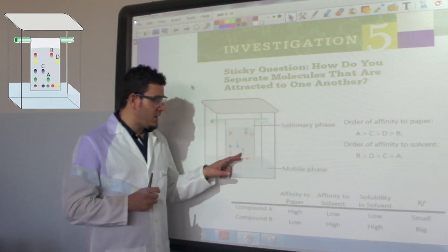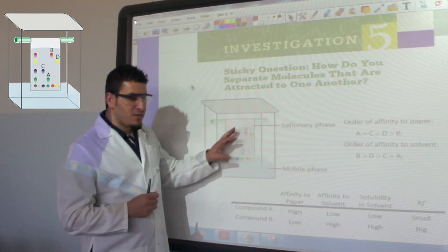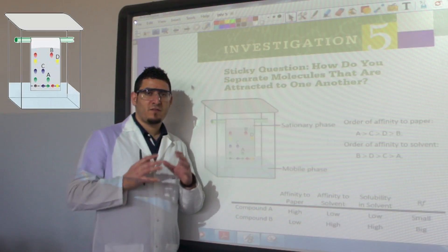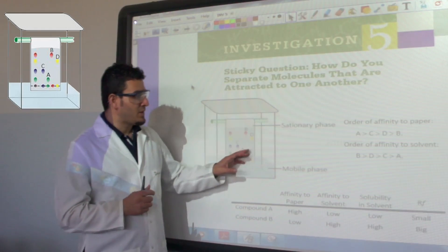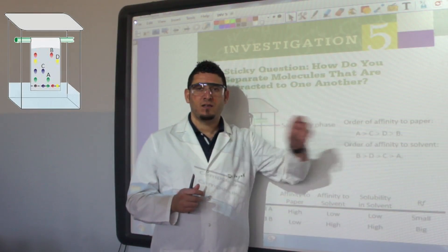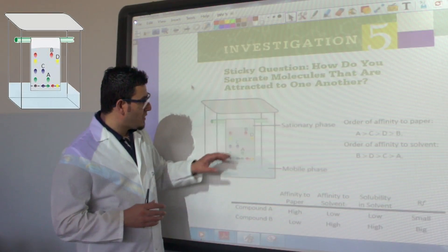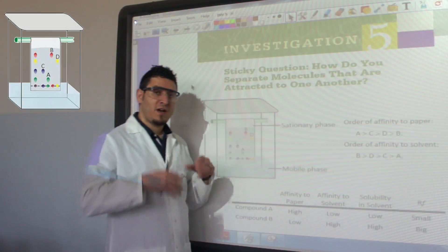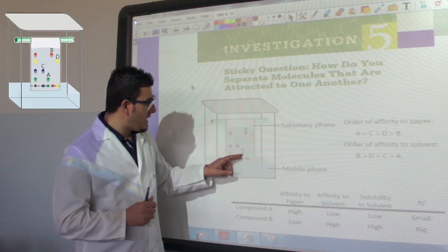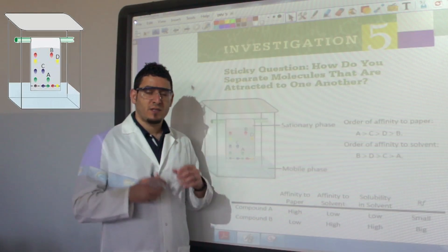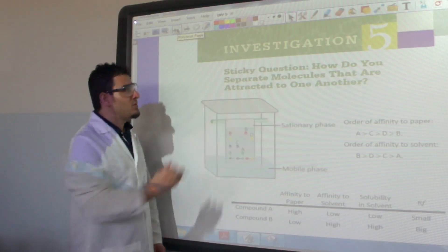In this example, A has moved the slowest on the paper and B has moved the fastest. Regarding affinity to paper, A has the strongest affinity to paper and B has the lowest. Regarding affinity to the solvent, B has moved the fastest with the solvent and therefore has the highest affinity to the solvent, while A was moving slowly, meaning its affinity to the solvent is very weak.